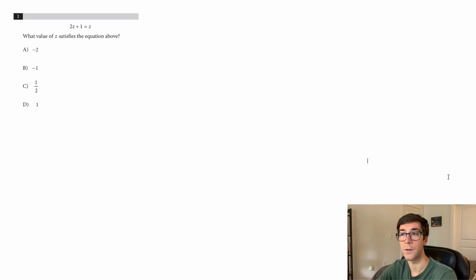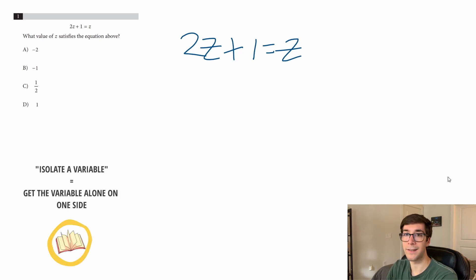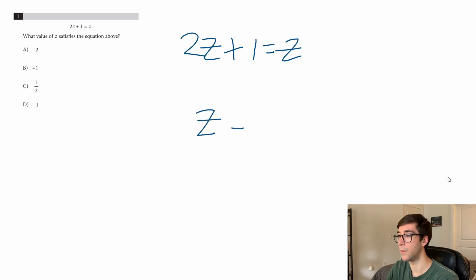The first question is: 2z + 1 = z. What value of z satisfies the equation above? When you see an equation asking you what value satisfies it, it's asking you to isolate the variable, which means getting z by itself equals something. That's how you solve equations—you get the variable by itself by slowly taking things away. This one's a little more complicated because we have z on both sides.